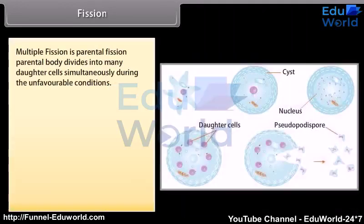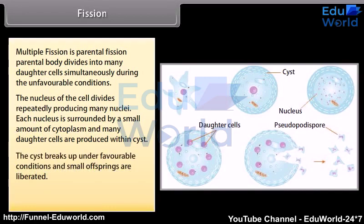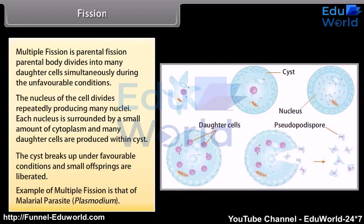Multiple fission occurs when the parental body divides into many daughter cells simultaneously during unfavorable conditions. The nucleus of the cell divides repeatedly, producing many nuclei. Each nucleus is surrounded by a small amount of cytoplasm, and many daughter cells are produced within a cyst. The cyst breaks up under favorable conditions and small offspring are liberated. An example of multiple fission is the malaria parasite Plasmodium.